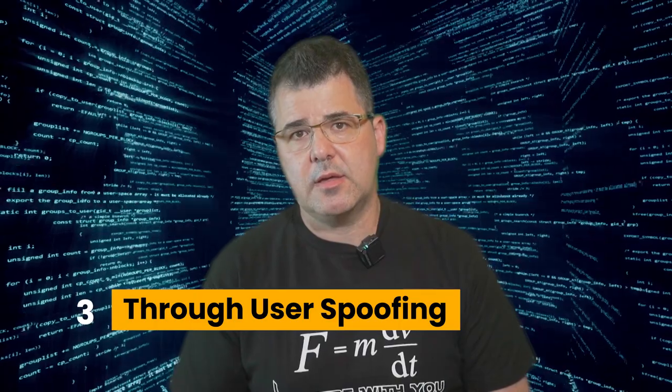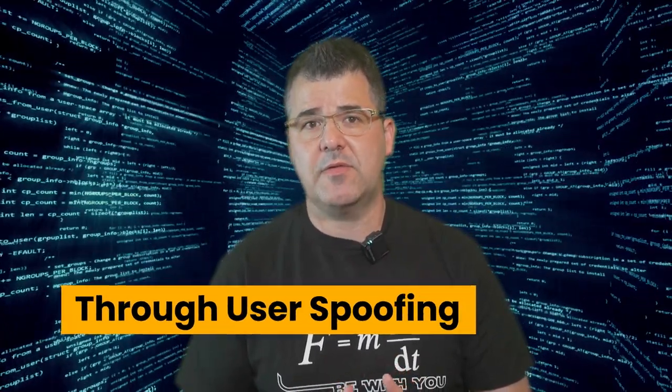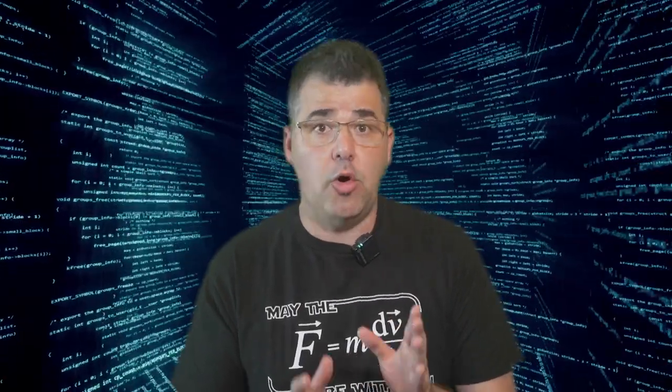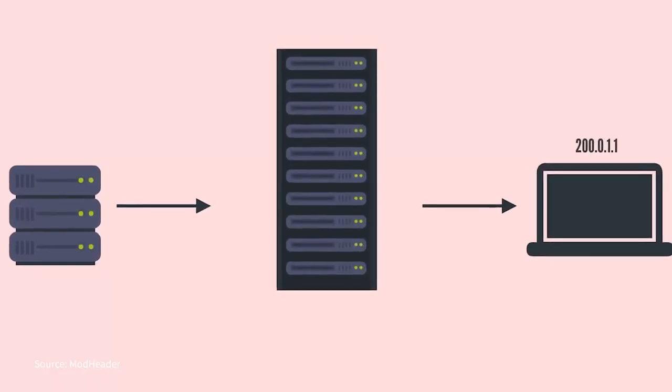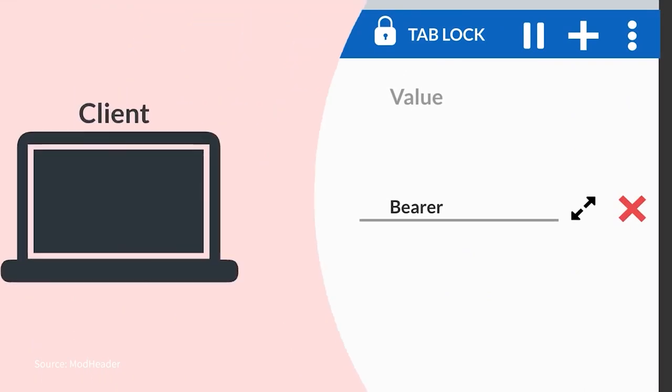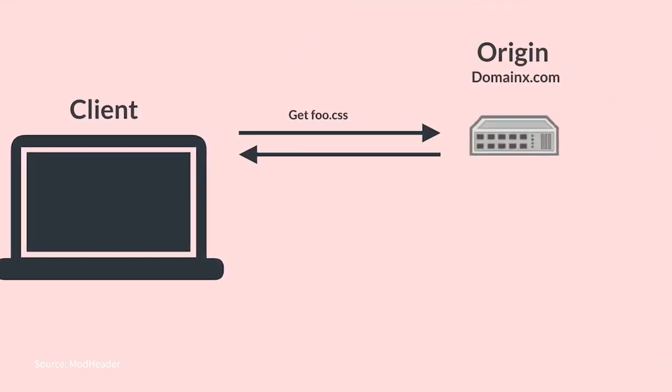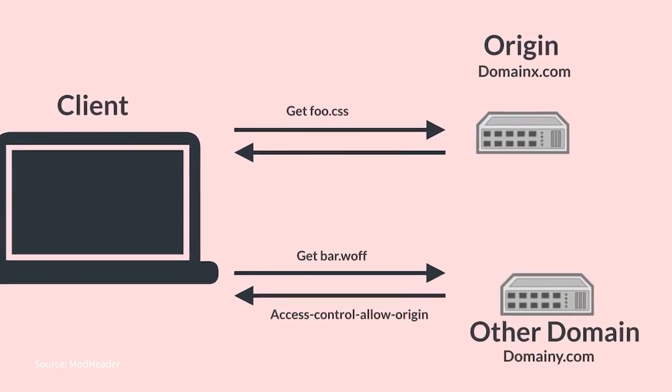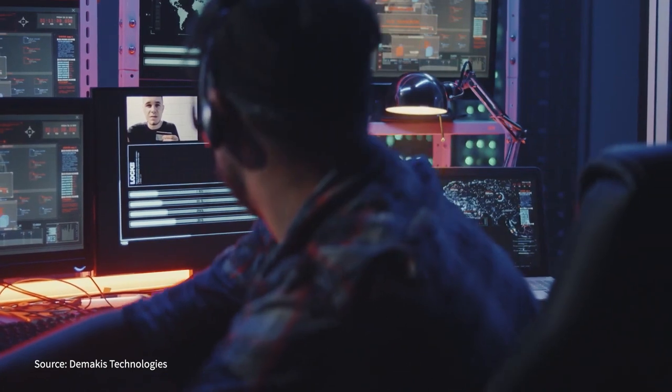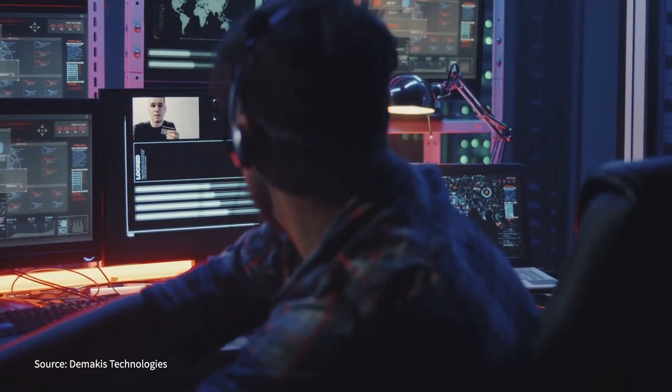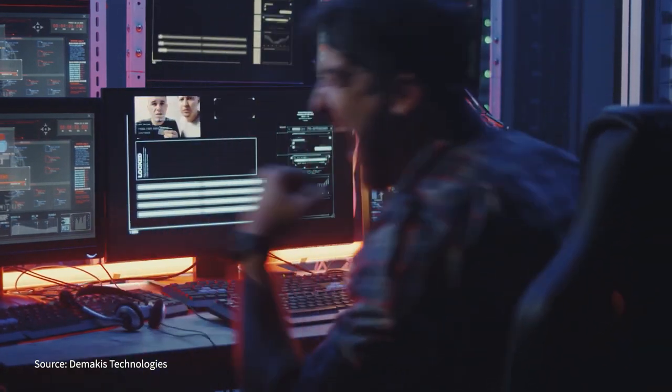Third way is through user spoofing. User spoofing is a method of gaining access to an API by impersonating a legitimate user. By doing this, one can bypass any security measures such as authentication or authorization. There are a few different ways to perform user spoofing, but the most common is to use a tool that allows you to change the headers of your HTTP request. This way, you can make it look like you are a different user with a different IP address and browser. Once you have gained access to the API, you can start exploring and collecting data. This can be used to gather sensitive information or to launch further attacks.